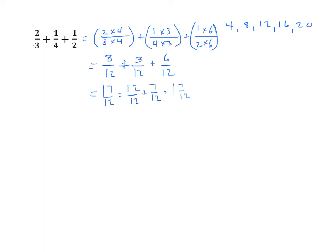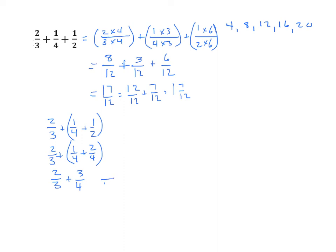Let's explore another strategy. Using the associative or commutative property, I can choose to work with any pair first. I'll choose 1 half and 1 fourth. Since 1 half equals 2 fourths, we have 2 thirds plus 1 fourth plus 2 fourths, which equals 2 thirds plus 3 fourths. Now I use cross multiplication with a common denominator of 12: 4 times 2 is 8 and 3 times 3 is 9. So 8 plus 9 is 17 twelfths, which again decomposes to 1 and 7 twelfths.